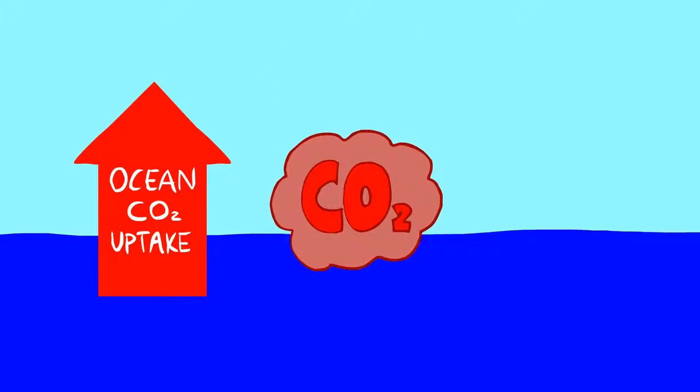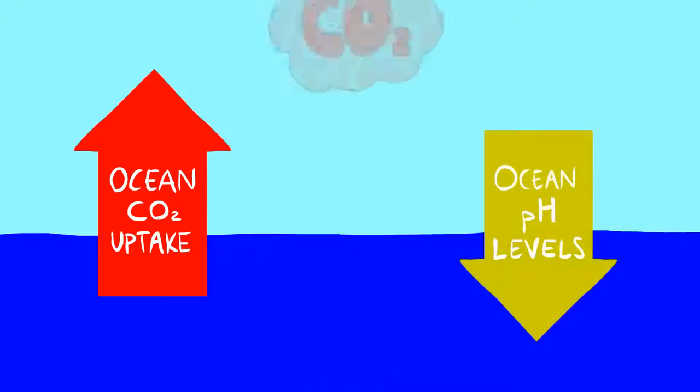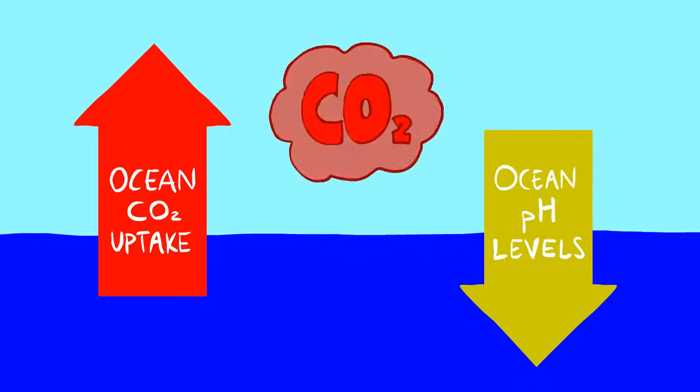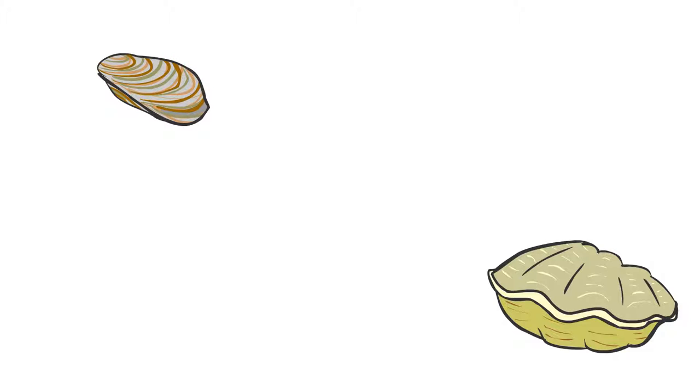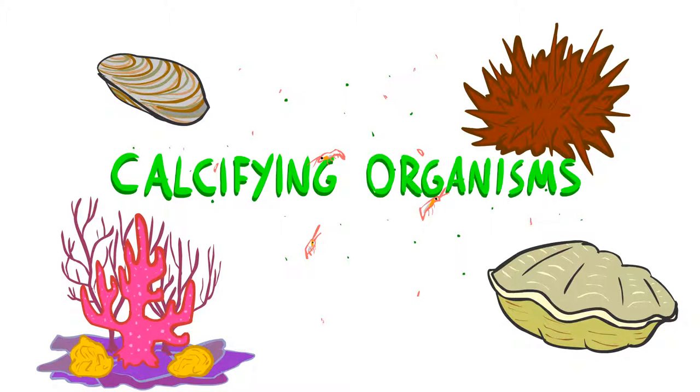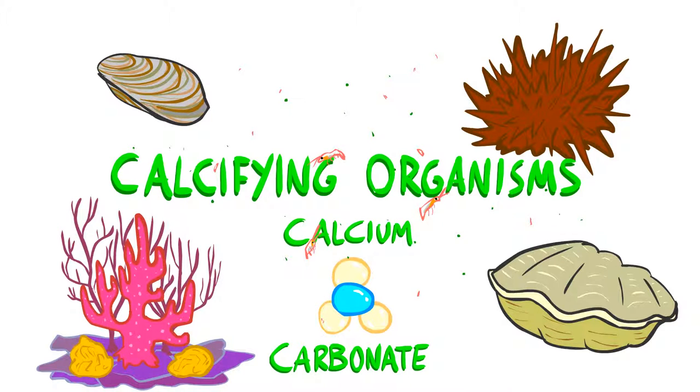But CO2 uptake in the ocean also means that the ocean's pH level is lowered. Higher levels of acidity can in turn threaten oysters, clams, sea urchins, corals, plankton, and all calcifying organisms that rely on calcium carbonate to produce their shells.